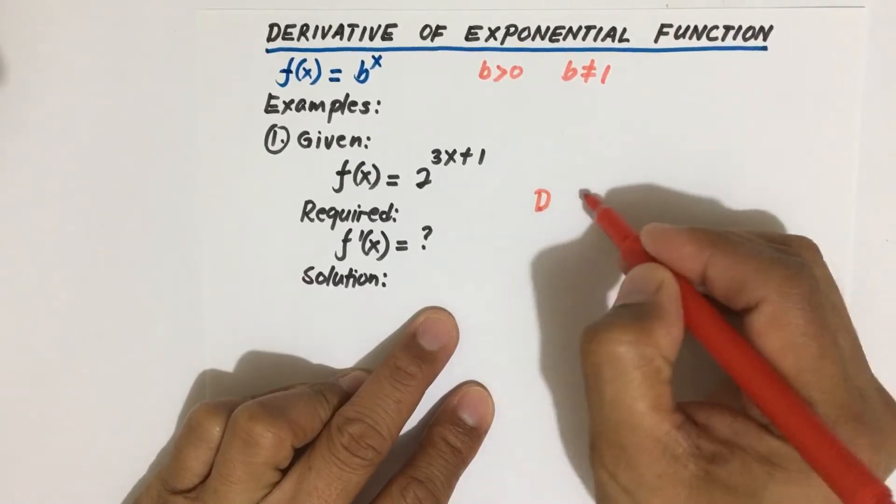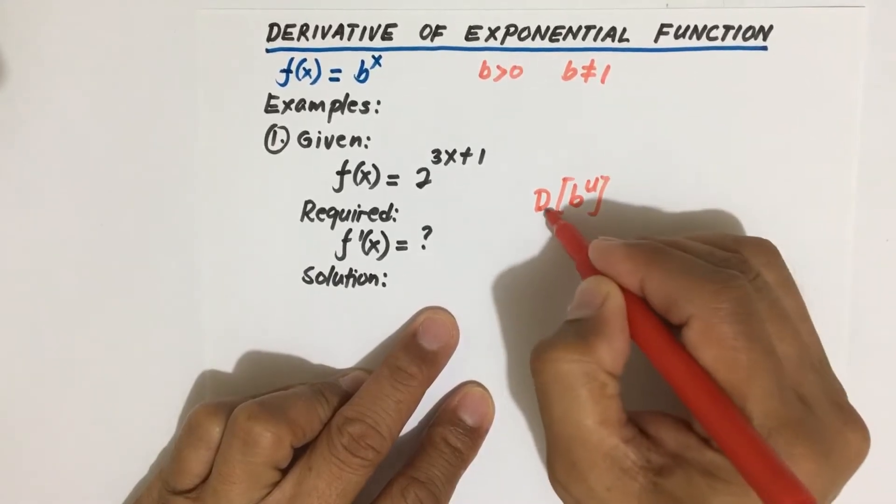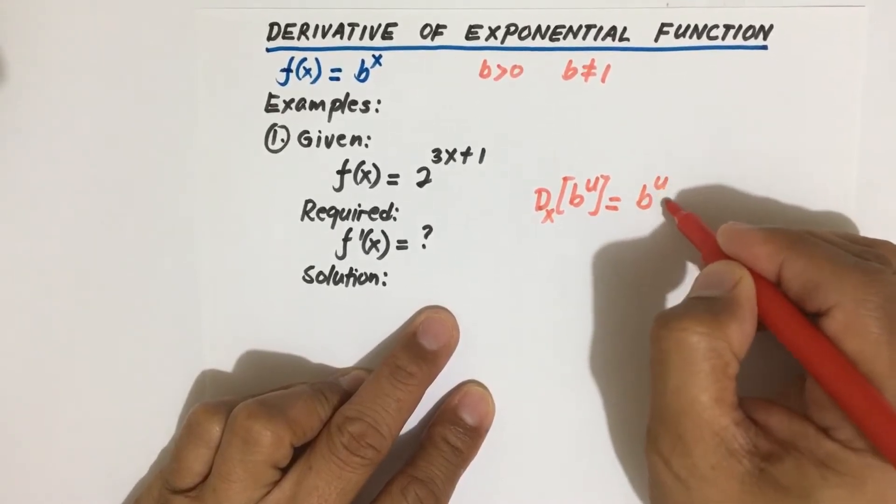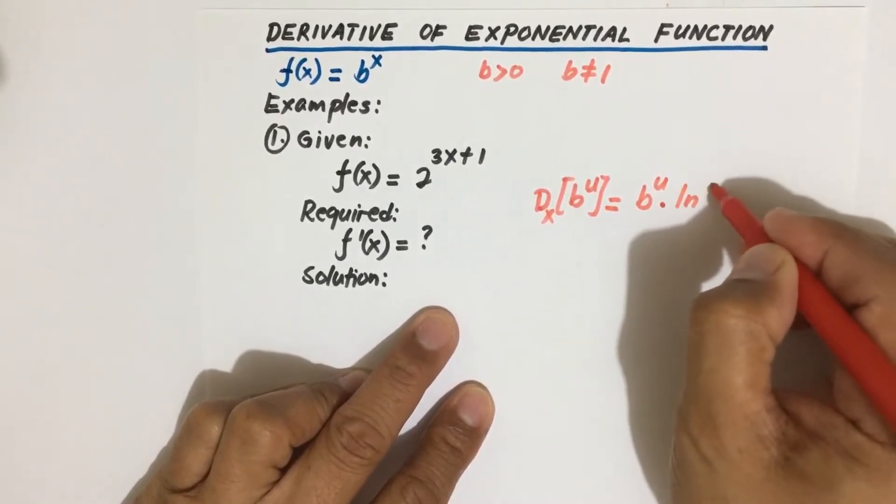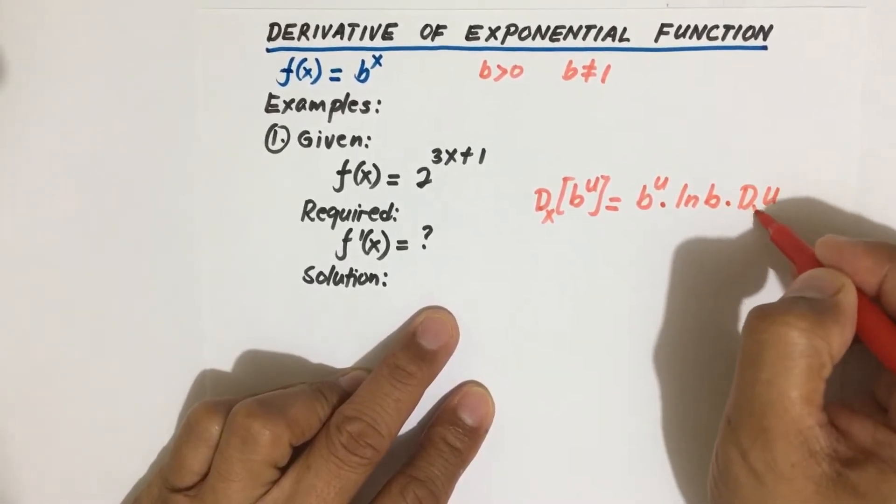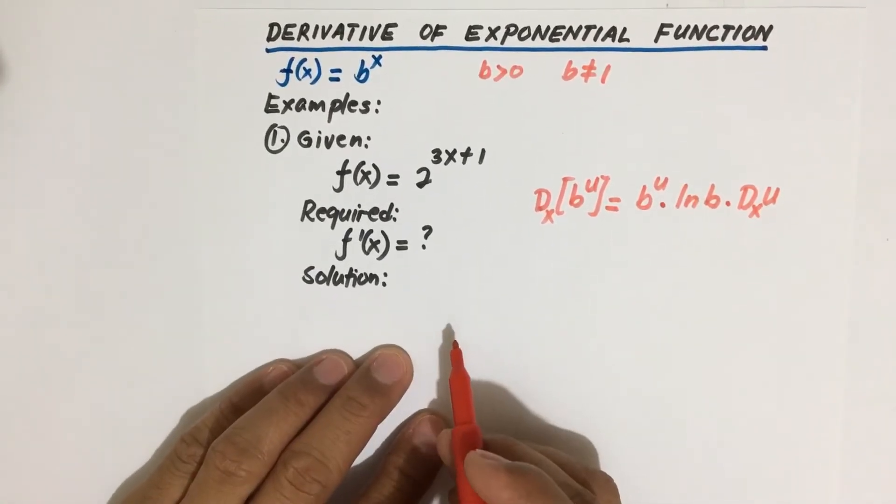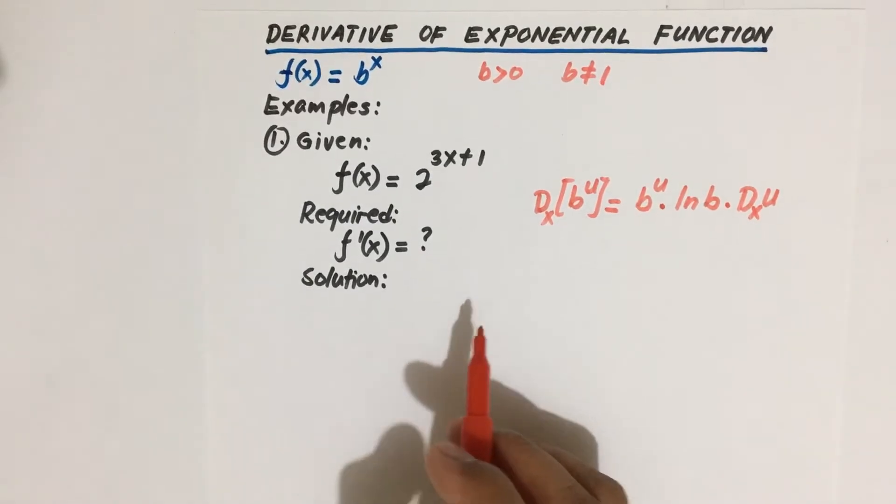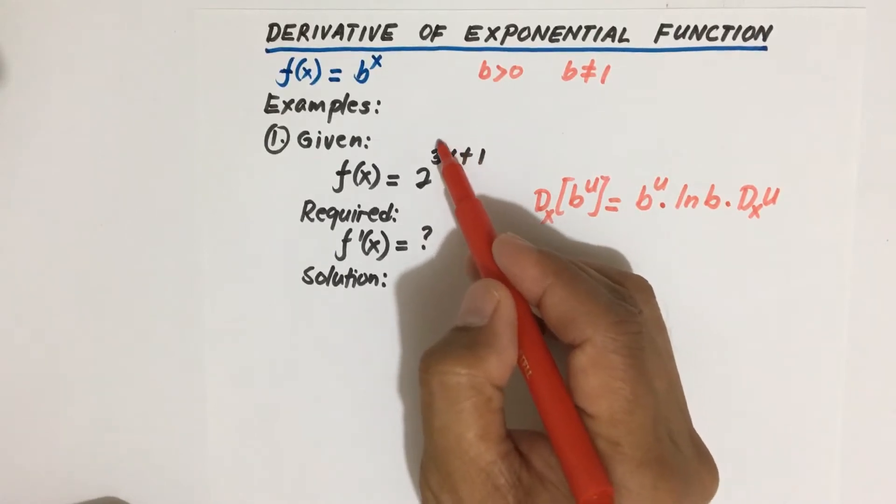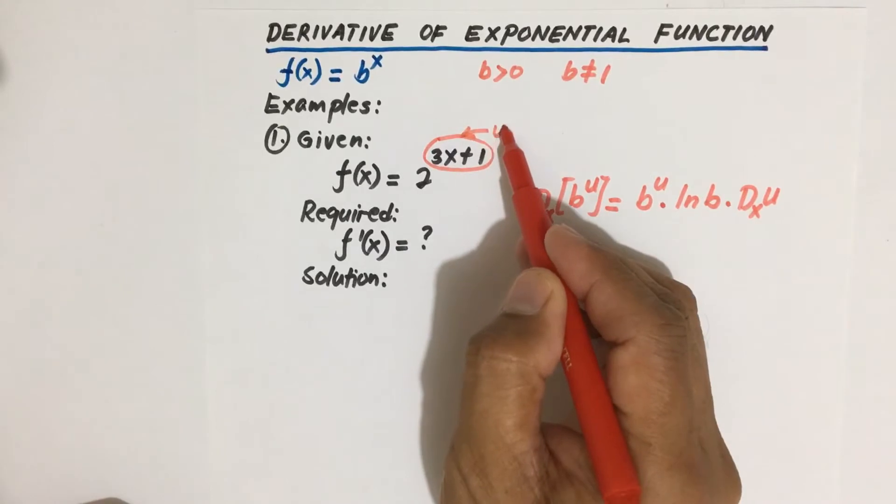So we can use the formula that we have derived in our previous video. The formula is the derivative of b to the power u with respect to x equal to b to the power u times ln b times the derivative of u with respect to x. Now let us identify what is our u. In our given f(x) equal to 2 to the power 3x plus 1, so this is our u.